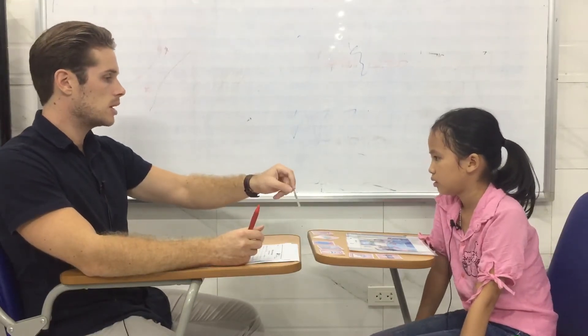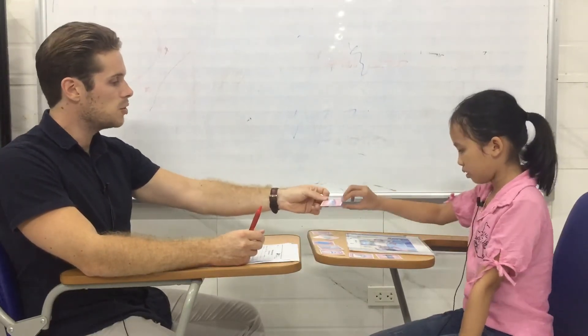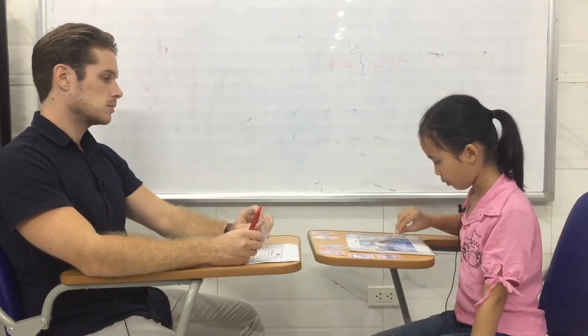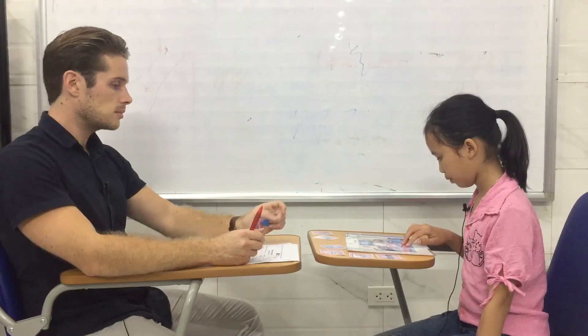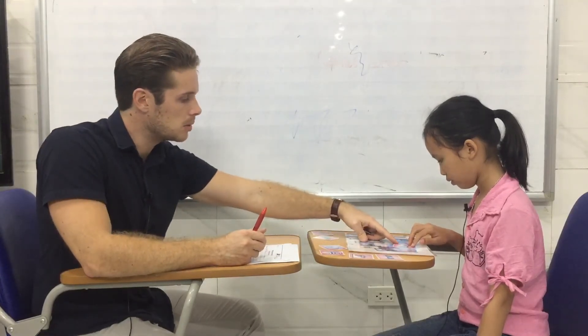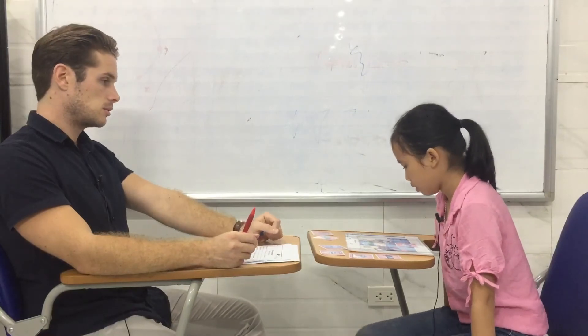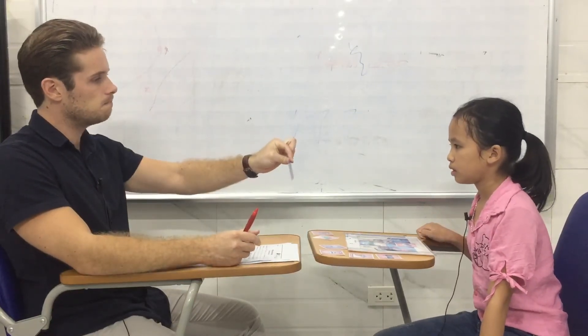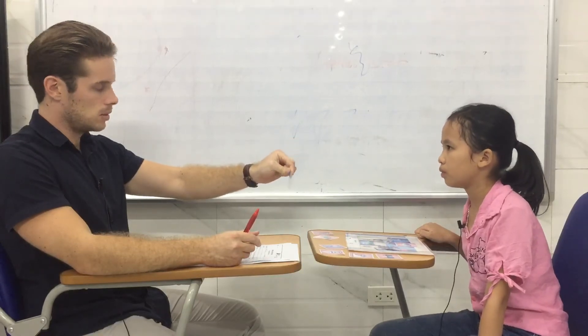What's that? A rubber, eraser. Okay, can you please put the rubber under the table. Where is the rubber? The rubber is under the table. Okay.